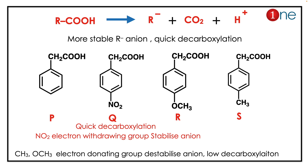If the anion (R⁻) is more stable, then decarboxylation will be quicker. So you have four different acids — let us analyze the situation. All four can form an anion, but only one has an electron withdrawing group.